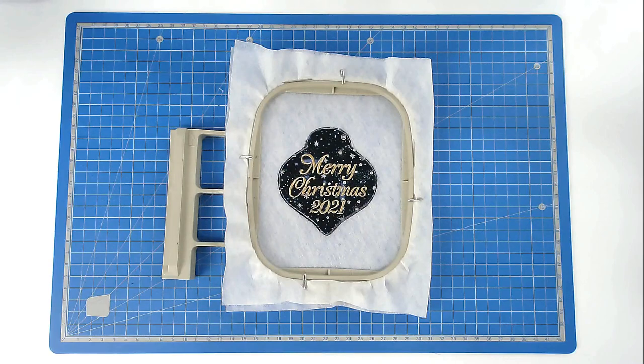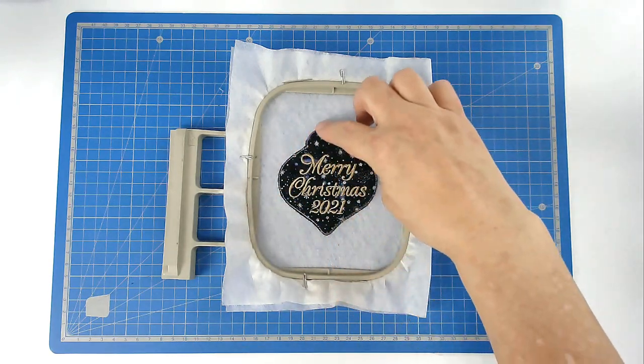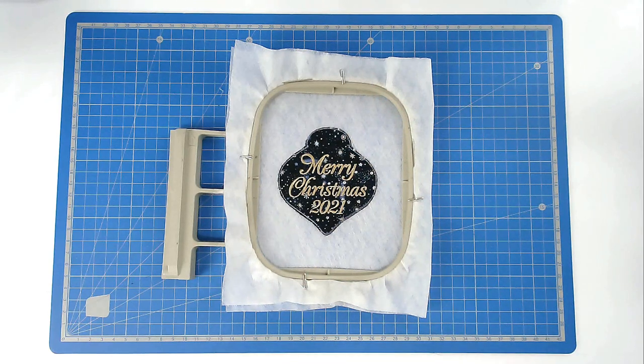Load your matching bobbin and thread color for the satin stitch around the edge of your bauble and the fill at the top into your machine. Then you're going to stitch round number eight.